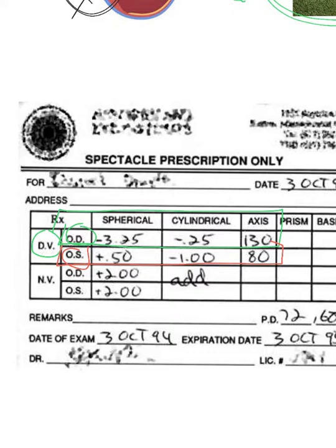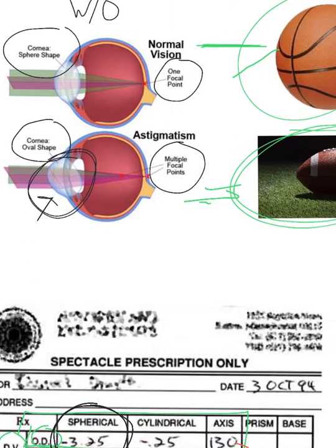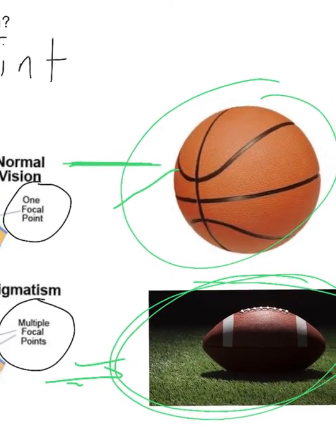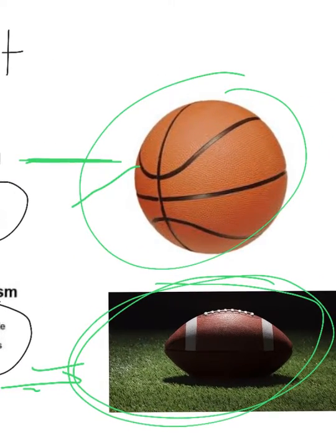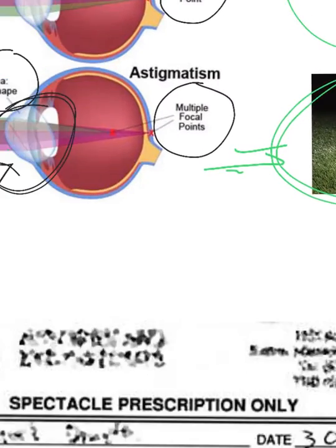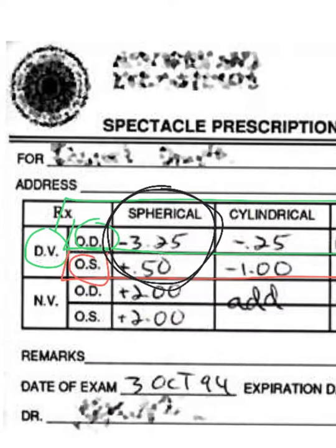If you see three numbers, you have astigmatism. If you don't have astigmatism, you only have the spherical number — which makes sense, because in a normal eye the cornea is like a basketball, which is spherical-shaped.